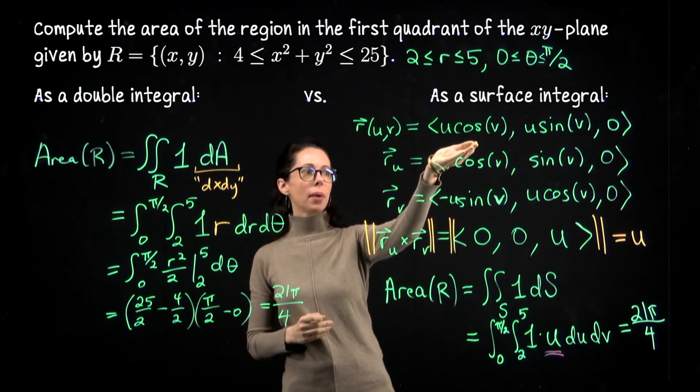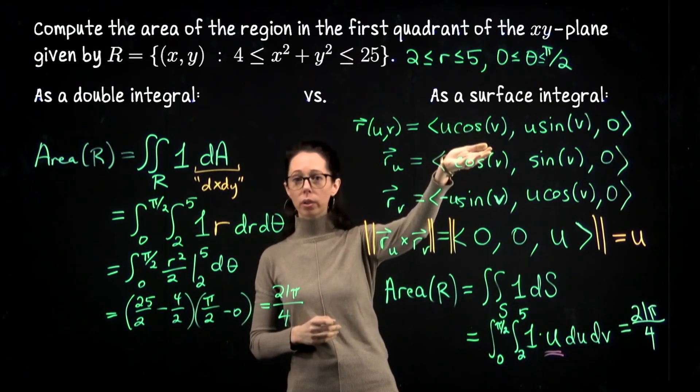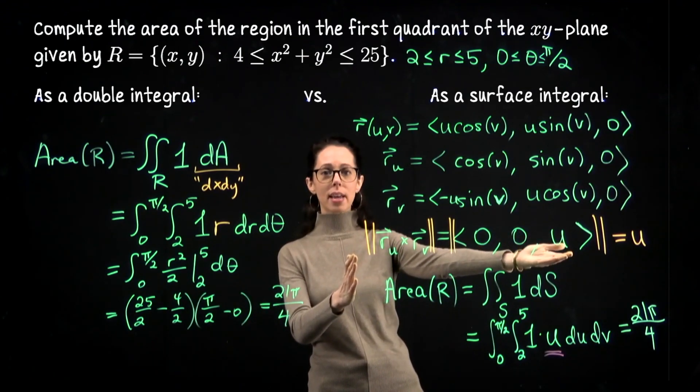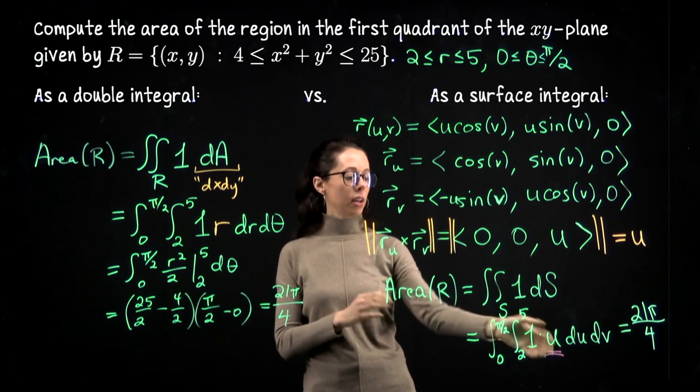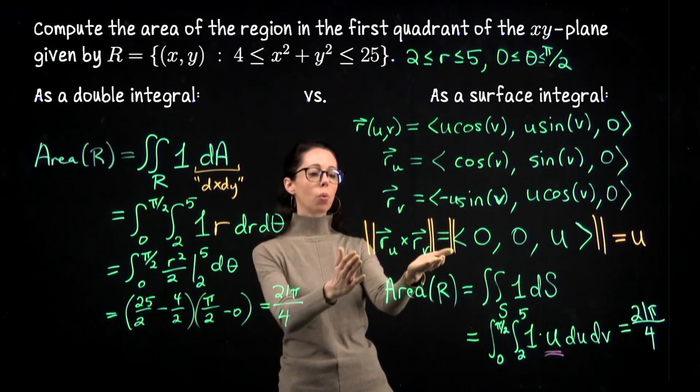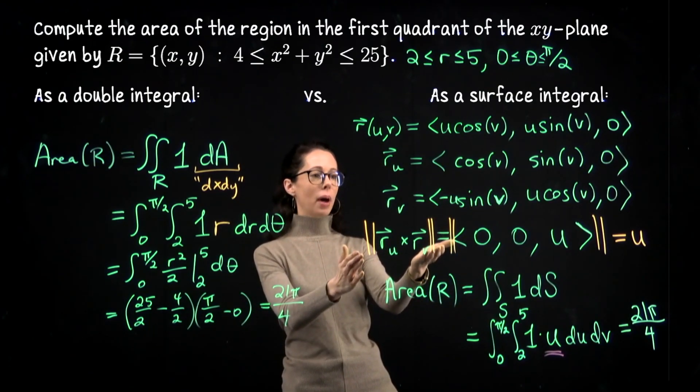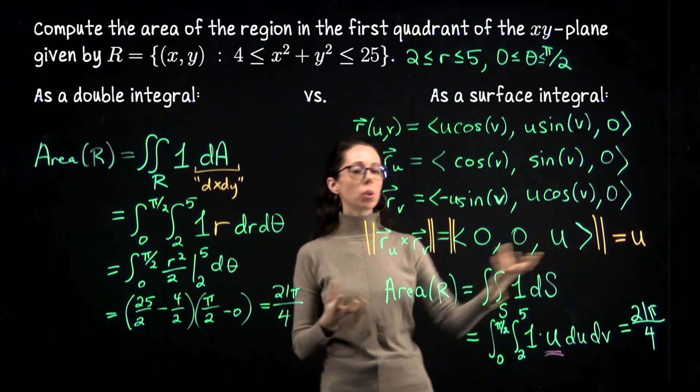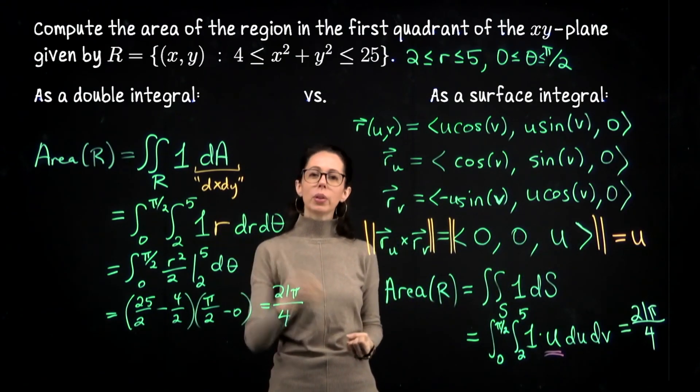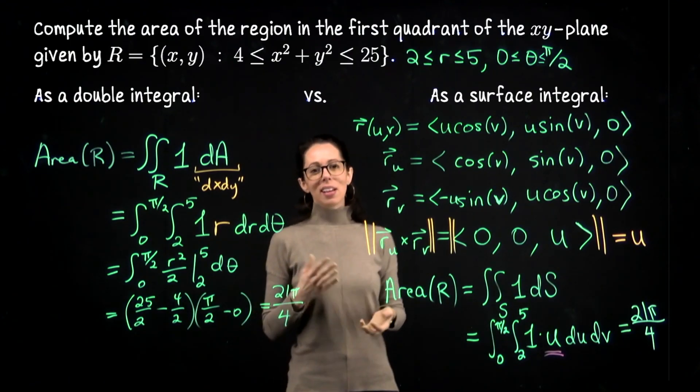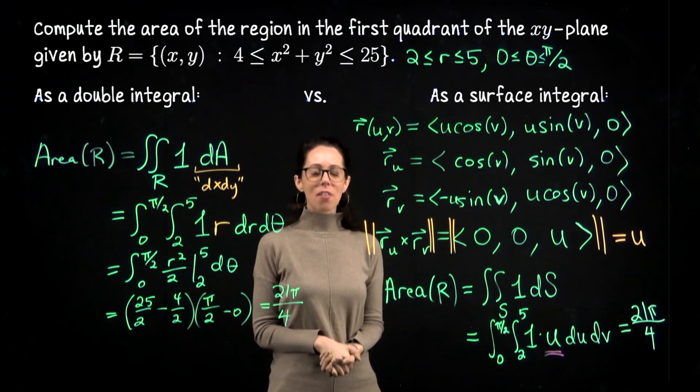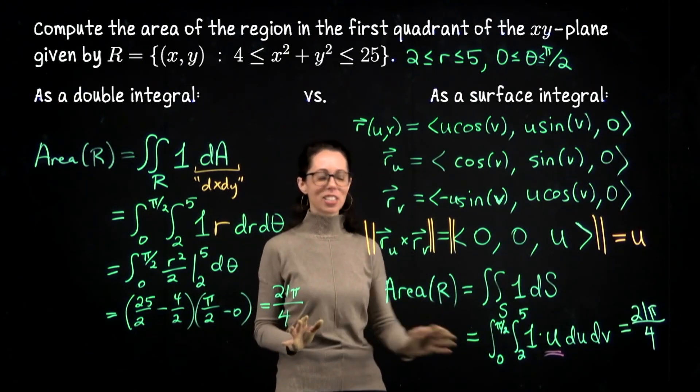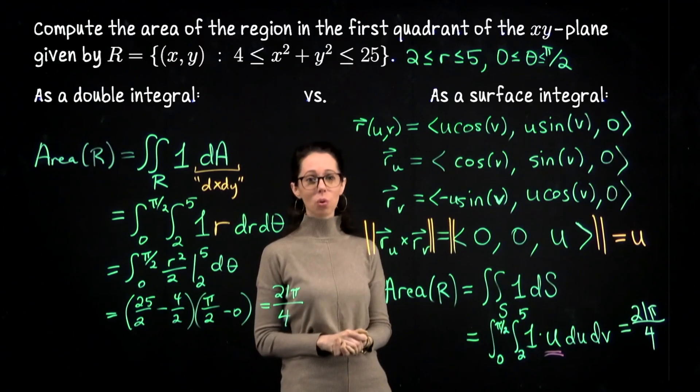So when you describe your parametric surface using polar coordinates, the conversion factor is already built into the process. So this u here was given to us through our parametrization when we arrived on this line. So by parametrizing with polar coordinates, taking the cross product, taking the length, we absorbed into the computation what we would normally bring in manually as a change factor. So students in multivariable calculus often ask like, 'Oh, I don't need to bring it in?' And I'm like, 'No, don't bring it in. It's not even correct to do so. It's in the computation already. You don't have to worry about it.'